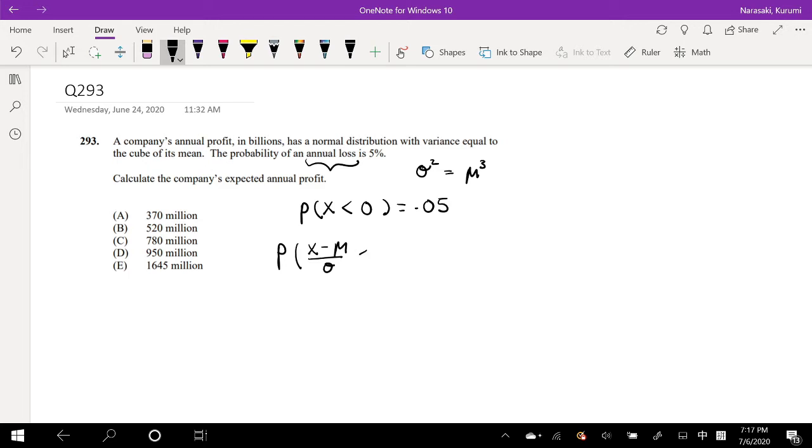Standard deviation is less than 0 minus mean, which we know is just mean over mean to the 3/2. So this gives us standard deviation is equal to mean to the 3/2. So they say this is equal to 0.05.